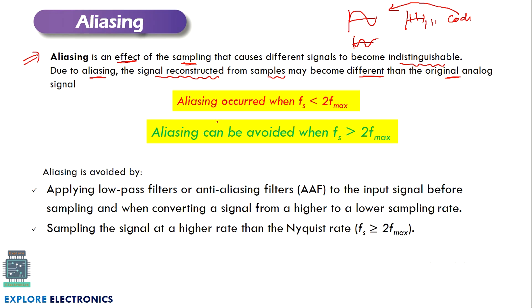When does aliasing occur? When we keep the sampling frequency less than twice the maximum frequency of the input signal or the baseband signal. To avoid aliasing, we need to keep the sampling frequency more than twice the frequency of the baseband signal.